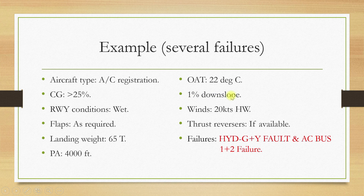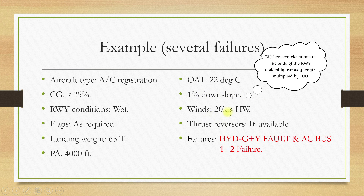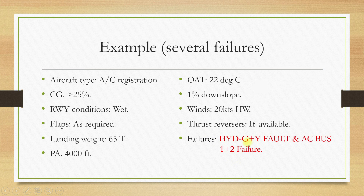In my previous video I have already explained how to calculate this. Winds: 20 knots of headwinds. Thrust reversers: availability will come to know. Failures: we are having green plus yellow hydraulic fault and AC bus 1 plus 2 failure.